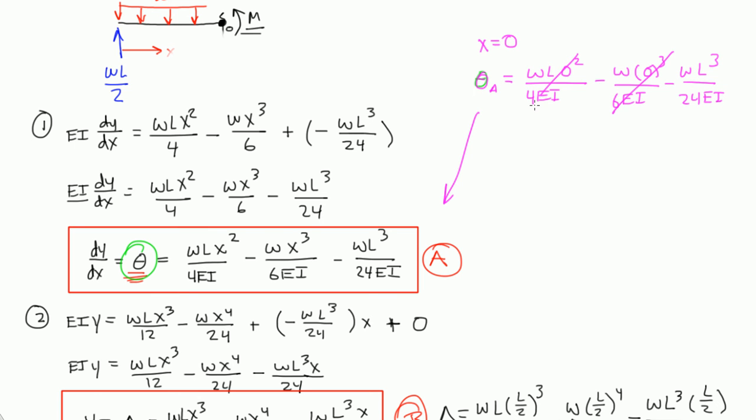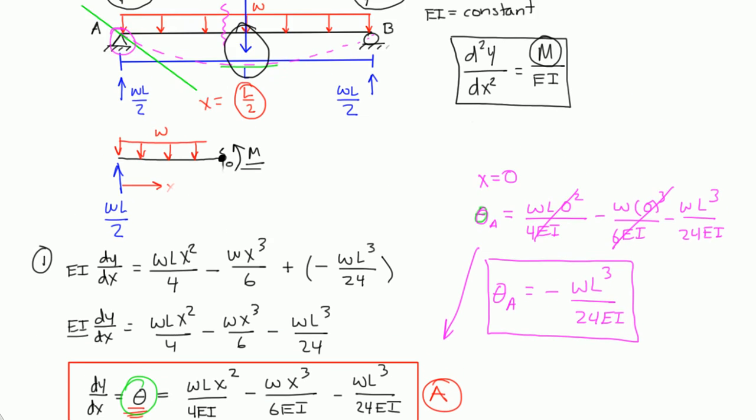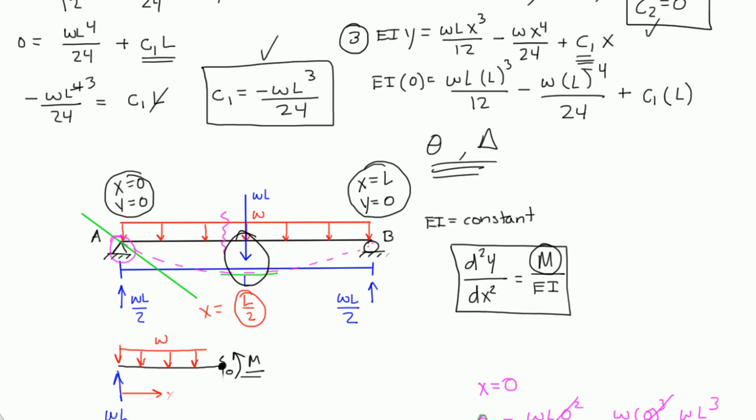And these zeros cancel out this term and this term, so we're left with theta A is equal to negative WL cubed over 24EI. So we figured out what the slope of A is, and really double integration method, you find an internal moment equation, and you use that equation in this formula, you integrate it one time to get your formula for rotation, and you integrate it two times to get your deflection.